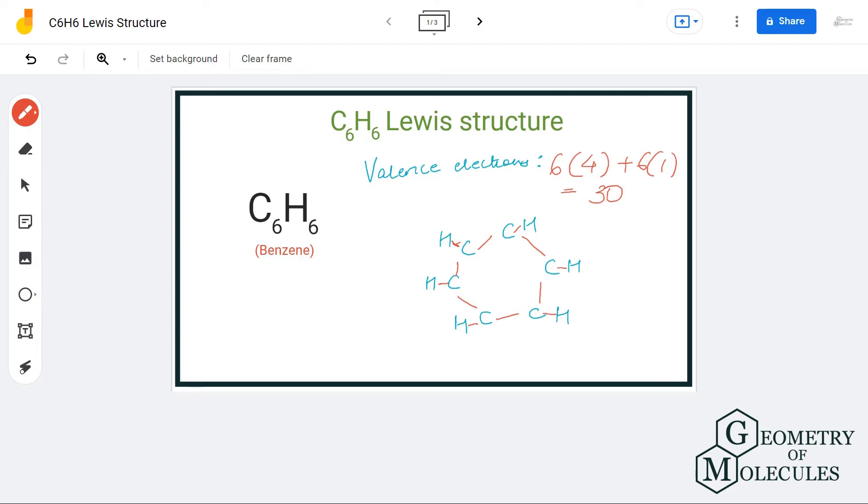So we can accommodate these electrons alternatively on these carbon atoms, because carbon atoms do have some valency that they can satisfy by forming a double bond. So here I'm going to place the bonds like this, alternately.